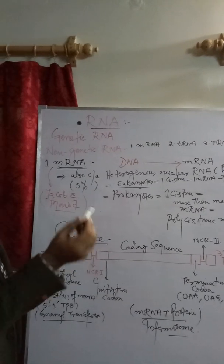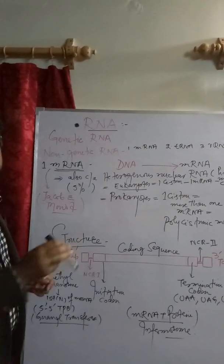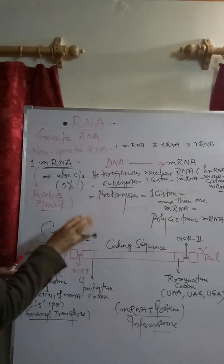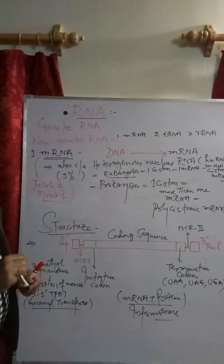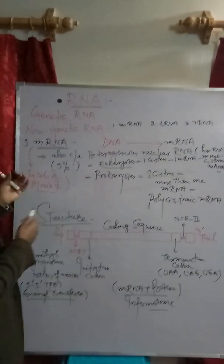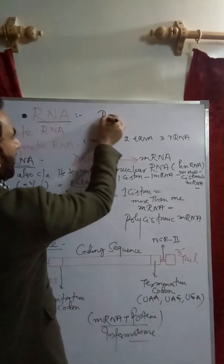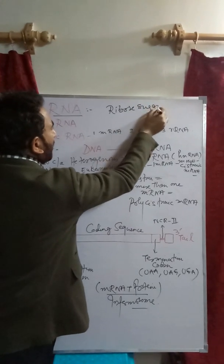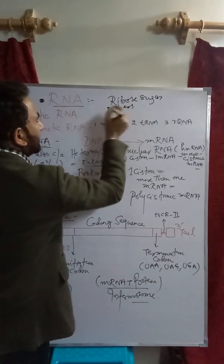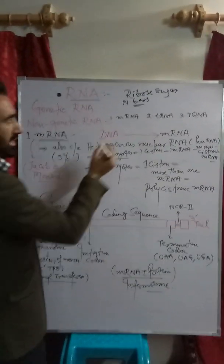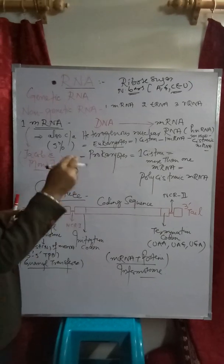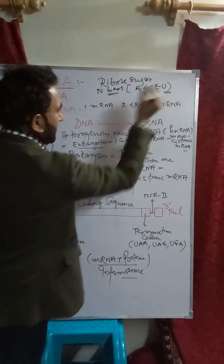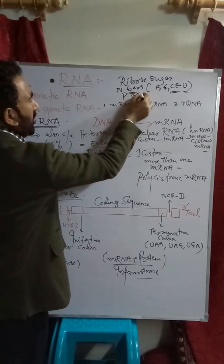RNA is a primitive nucleic acid that developed about 3.7 billion years ago. It is simply a polynucleotide chain made up of a large number of nucleotides. Each nucleotide is composed of ribose sugar, nitrogenous bases — adenine, guanine, cytosine, and uracil — and phosphoric acid. Thymine is absent in RNA; instead, uracil is present.